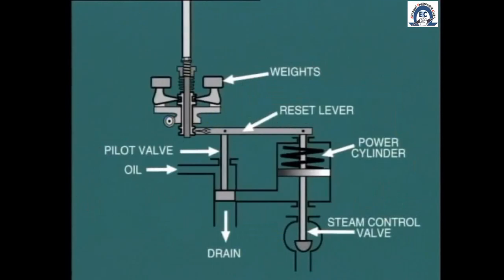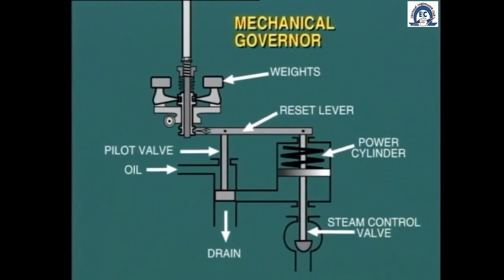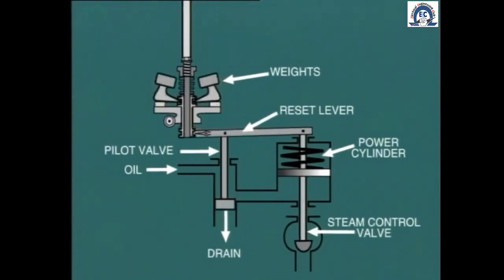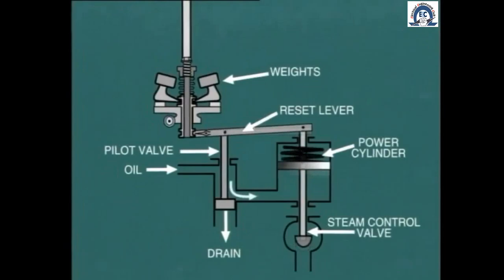This schematic shows us a simplified version of a hydraulic control scheme. In this particular arrangement, a mechanical governor is used to sense turbine speed. A change of turbine speed causes the centrifugal weights to move. For example, a decrease in speed causes the centrifugal weights to move inwards and lower the pilot valve. This in turn allows more high-pressure oil to enter the power cylinder and raise the piston against the compression spring. This movement of the power piston opens the steam control valve and allows more steam to enter the turbine, which causes its speed to increase. Also note, as the power piston rises, the reset lever lifts the pilot valve back into the neutral position again.